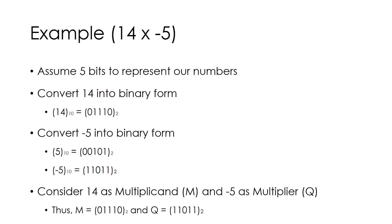Let's take an example for multiplication. I have taken number 14 and minus 5 for multiplication. Assume 5 bits are taken to represent our multiplicand M and multiplier Q. We are considering 5 bits because an extra bit is required to represent the sign of the number. Generally we take 4 bits to represent a number, but here we are taking 1 extra bit to represent the sign.